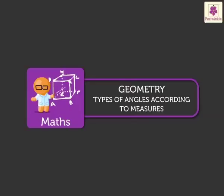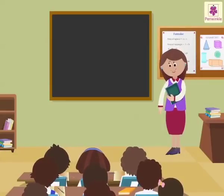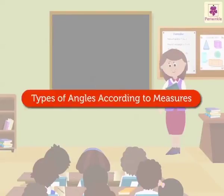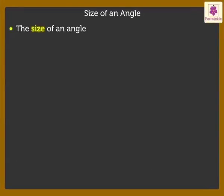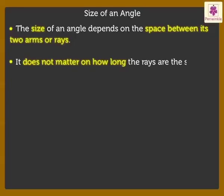Types of Angles According to Measures. Good morning children. Today, let's learn the different types of angles according to their measures. The size of an angle depends on the space between its two arms or rays. No matter how long the rays are, the size of the angle remains the same.